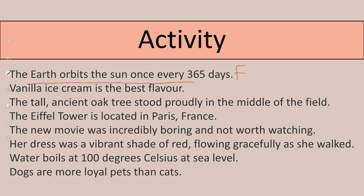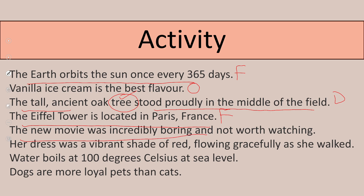'Vanilla ice cream is the best flavor' — this is an opinion. 'The tall ancient oak tree stood proudly in the middle of the field' — this is description, because we are describing the tree. 'The Eiffel Tower is located in Paris, France' — this is a fact. 'The new movie was incredibly boring and not worth watching' — this is an opinion. 'Her dress was a vibrant shade of red, flowing gracefully as she walked' — we are giving the description of her dress. 'Water boils at 100 degrees Celsius at sea level' — this is a fact.